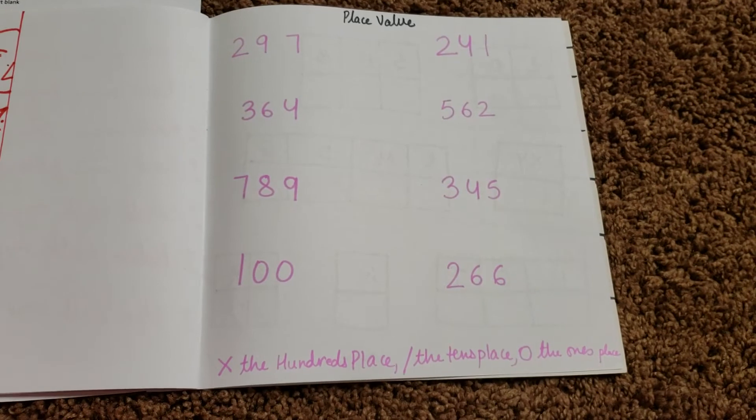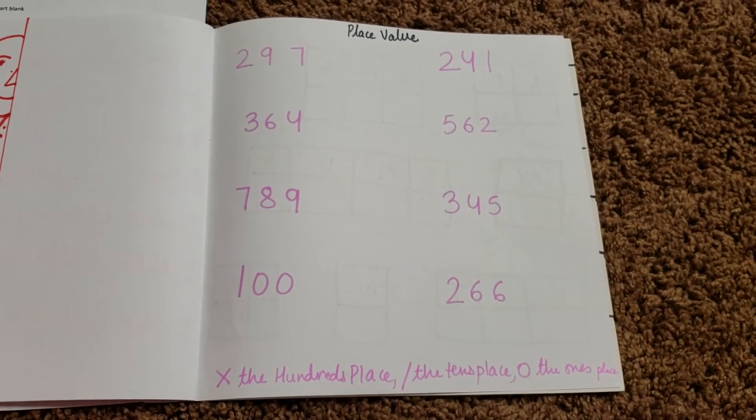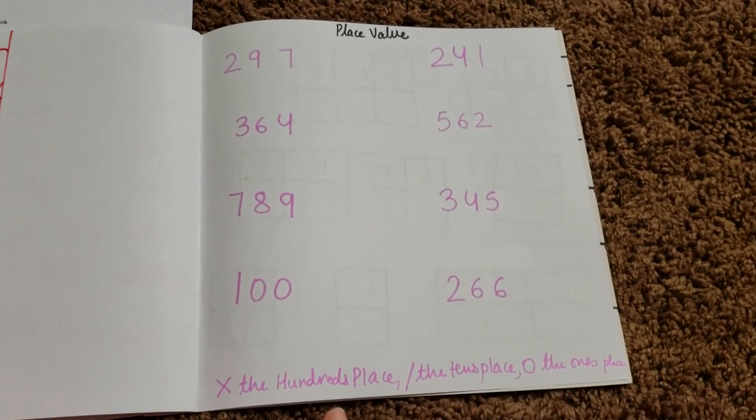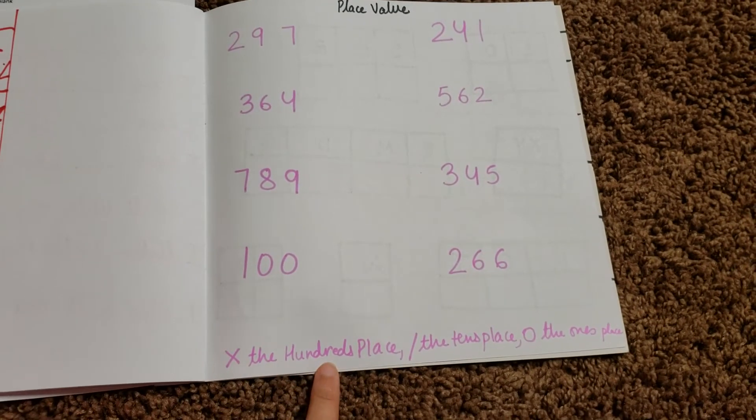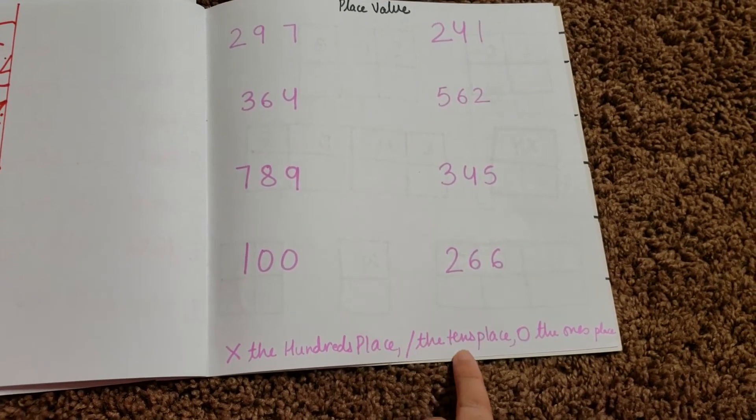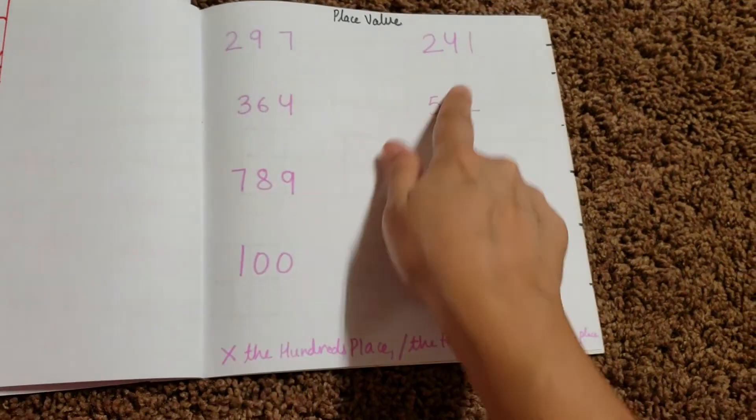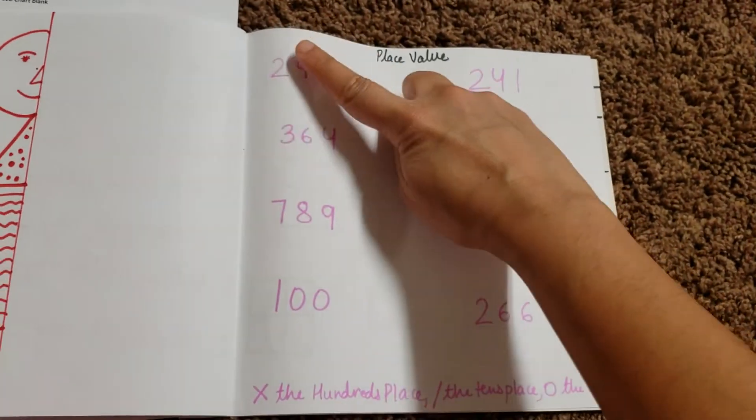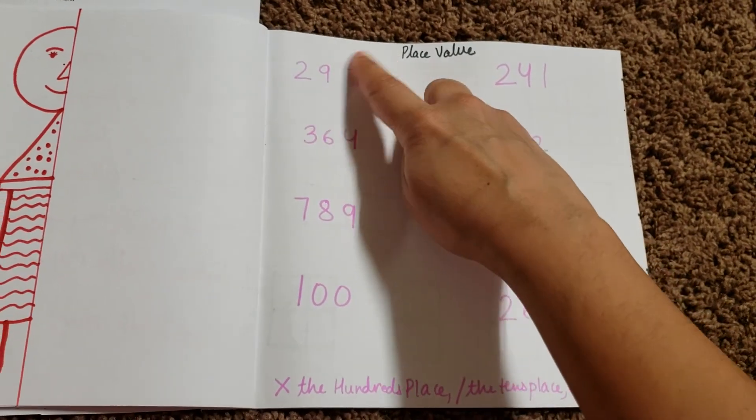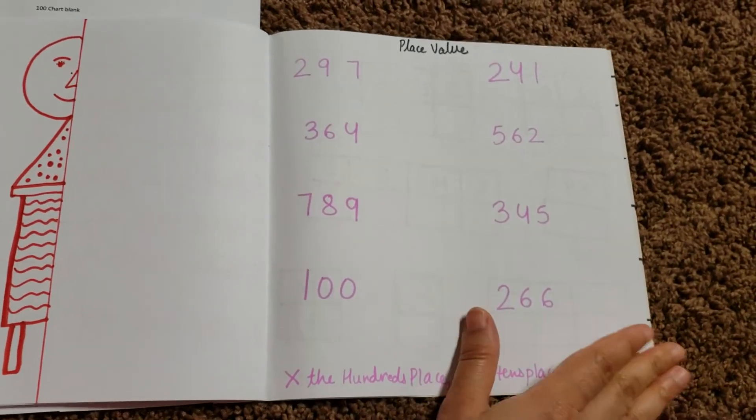Okay. So we are learning place value and what I've done, I have done a number up to hundred. So he needs to put an X on the hundreds place. He needs to put a slash at the tens place and he needs to circle the ones place. So there are three instructions that he needs to do for all these numbers. So the X, he needs to dash and he needs to circle. So that's what he needs to do everywhere.